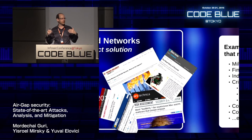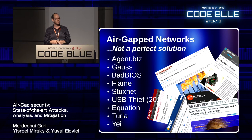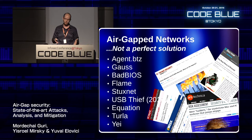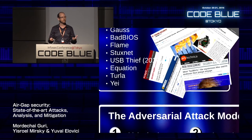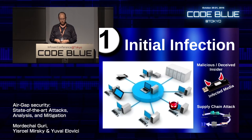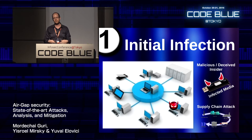But putting an Air Gap is not a perfect solution. There's a list of malwares in recent years found to infect air gap computers — for example, the Stuxnet virus, which infected the Iranian nuclear power plants even though they were not connected to the public network. Some sort of infected USB was likely plugged in at some point. The first step is the initial infection: a malicious or deceived insider plugs in a USB or other media, infecting the network with malware.